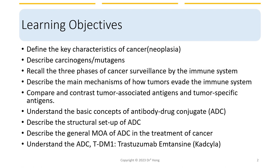Here are the lecture objectives. We will have a very brief overview of the key characteristics of cancer and look at how our immune system monitors cancer cell development and how cancer cells evade the immune system. Then we will switch gears to look at various aspects of antibody-drug conjugates, abbreviated as ADC.